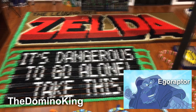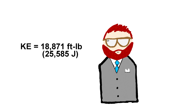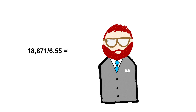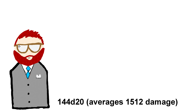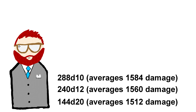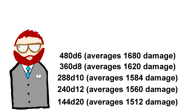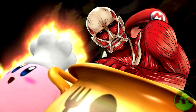Now, doing the same calculation, we have to calculate the kinetic energy of that 10-foot pole, which gives us a kinetic energy of 18,871 foot-pounds. Dividing that by our foot-pounds-per-damage figure, we'd be rolling 1d2881. To put that in perspective: that would be 144d20s, 240d12s, 288d10s, 360d8s, 480d6s, and 720d4s. You're cooking this titan.